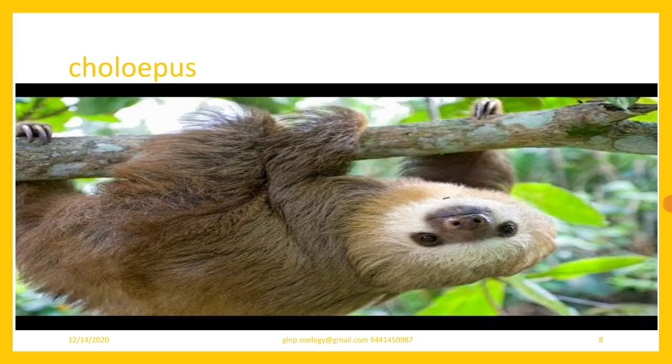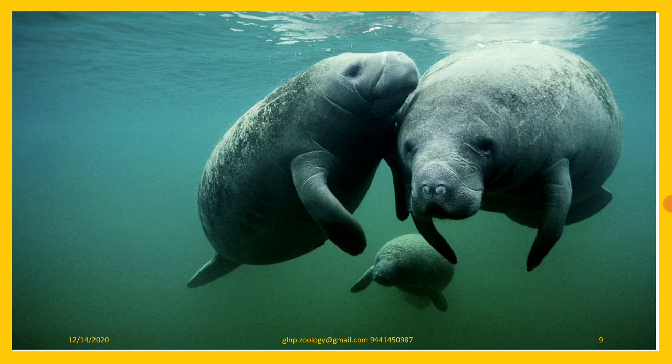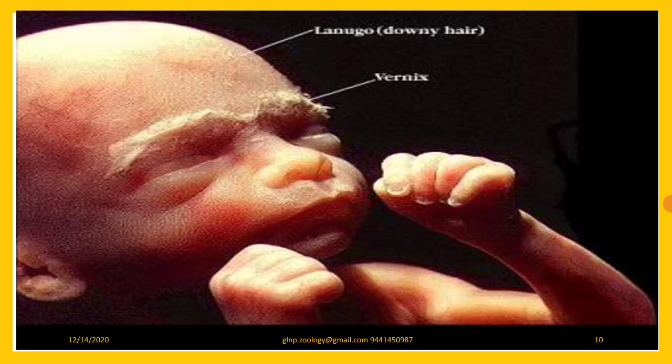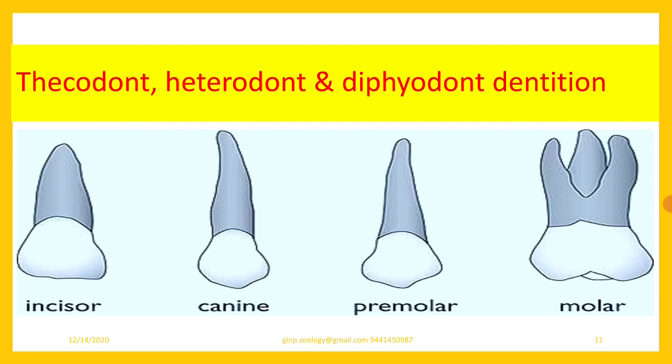Lanugo hair is the embryonic hair that is present in the embryonic condition of all mammals. Dentition is thecodont, heterodont, and diphyodont.